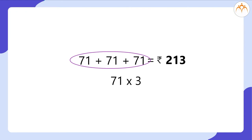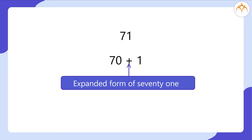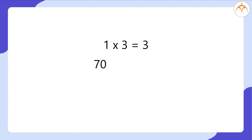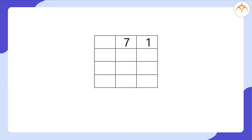Let us see how we do that. What do we mean by 71? It is nothing but 70 plus 1, right? You know that this is called the expanded form of 71. That means we can multiply 1 by 3 and then 70 by 3, and add these two answers. Now, how do we do it vertically? 71 multiplied by 3 is equal to 213.